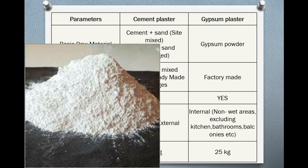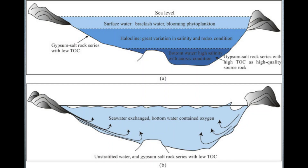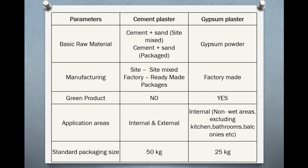Gypsum contains calcium sulfate. When we evaporate the content slowly, it leaves sediment. We use rock salt or sulfate salt, which is then ground into gypsum powder. That is the manufacturing process — cement plaster uses conventional cement-sand material mixed on site, while gypsum plaster is a factory-made product.